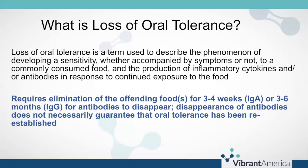Another concept to understand is loss of oral tolerance — the term used to describe when somebody develops a sensitivity. They've lost oral tolerance, which may or may not have accompanying symptoms. It's usually a commonly consumed food, and there's production of inflammatory cytokines and/or antibodies in response to continued exposure. It requires eliminating the food for three to four weeks for IgA antibodies, or up to three to six months for IgG, for those antibodies to disappear. Disappearance of antibodies does not necessarily guarantee that oral tolerance has been reestablished.